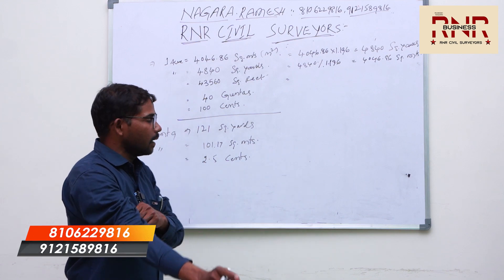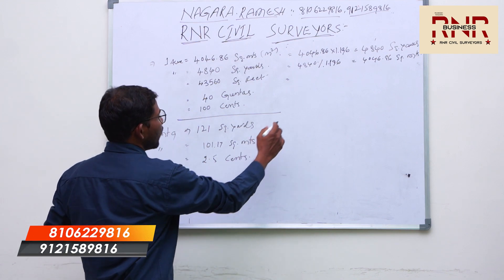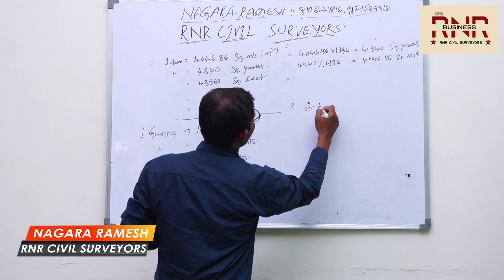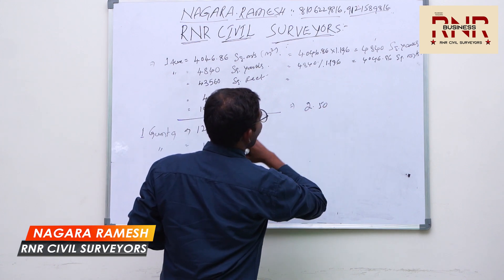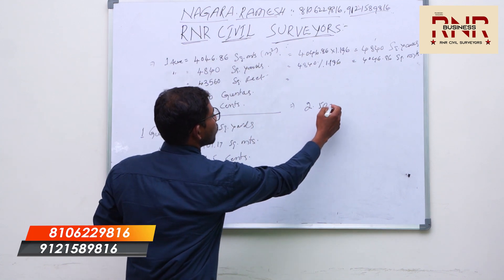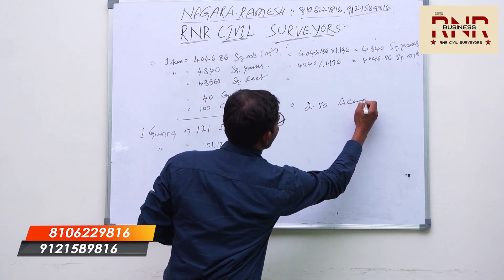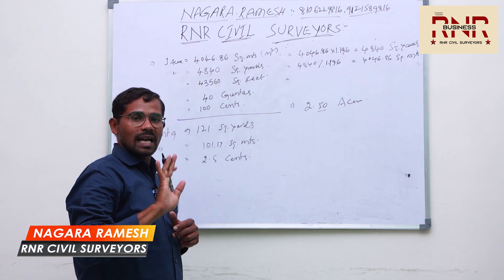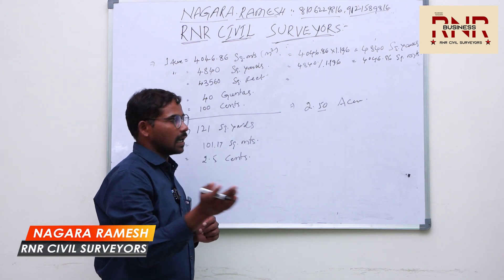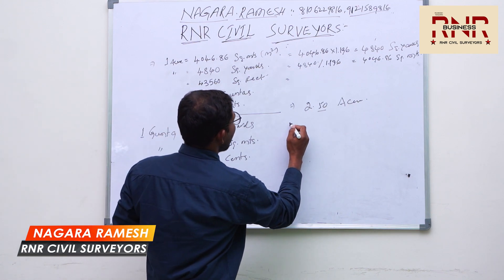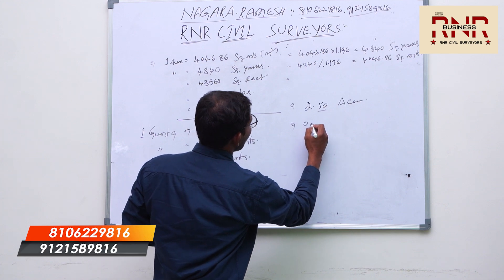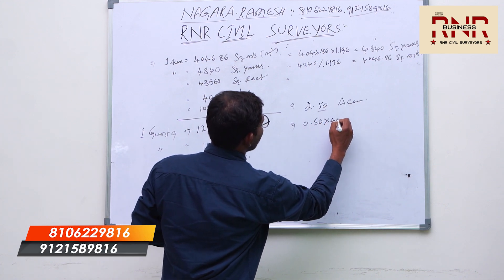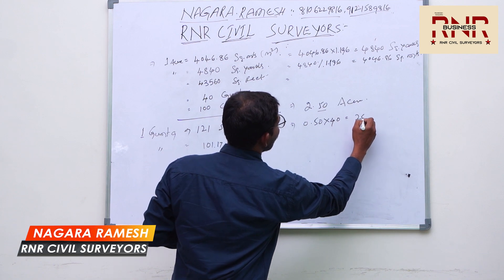For example, if you have 2.50 acres, the decimal part 0.50 is not 50 guntas. You multiply 0.50 into 40, which gives you 20 guntas.